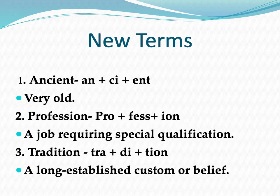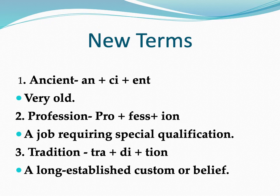Let's revise some of the new terms that we have learned in this chapter. First, ancient — ancient means very old. Second, profession — profession means a job requiring special qualification. Third, tradition — tradition means a long-established custom or belief.